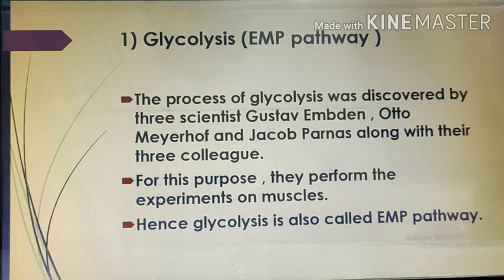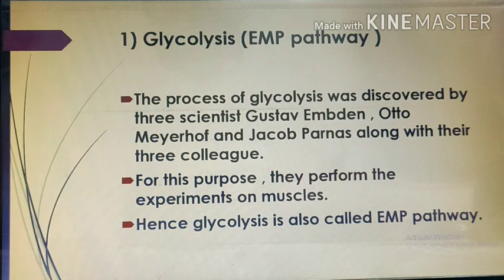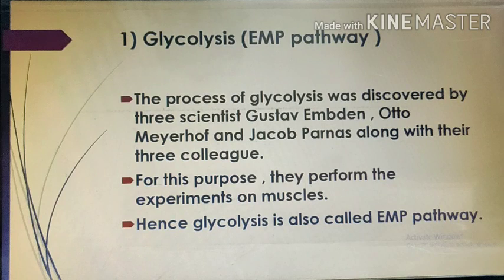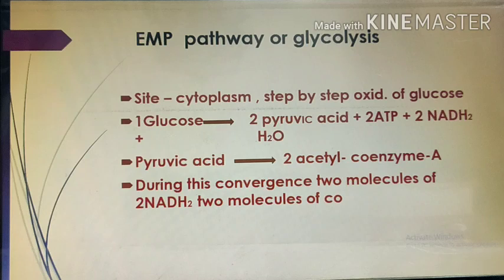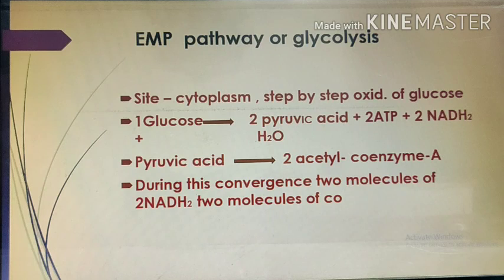Glycolysis is also called the EMP pathway. EMP stands for the names of three scientists: Gustav Emden, Otto Meyerhoff, and Jacob Parnas, who discovered this process along with their colleagues. E stands for Emden, M for Meyerhoff, and P for Parnas. They performed experiments on muscle cells. The EMP pathway or glycolysis takes place in the cytoplasm — the site of glycolysis is the cytoplasm — where the glucose molecule is oxidized step by step.